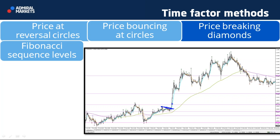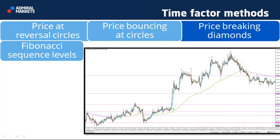You want to do it at a spot where your larger analysis shows potential for a breakout and momentum to occur. I use a Fibonacci sequence levels tool, and typically you get more momentum after the third level — between the third and fourth, and the fourth and fifth — so looking for continuations there makes sense.